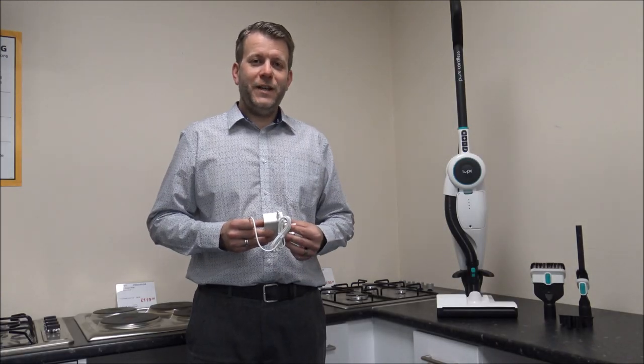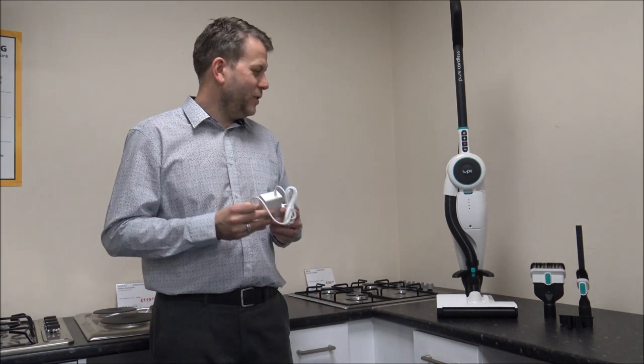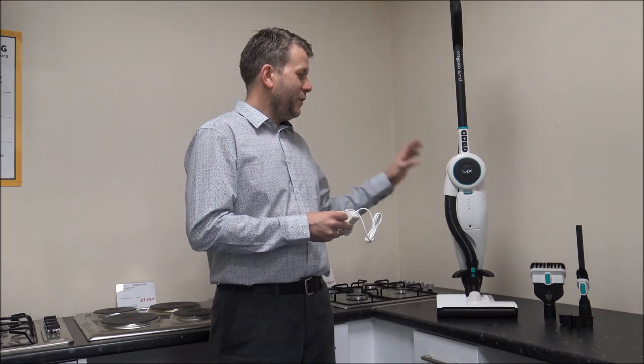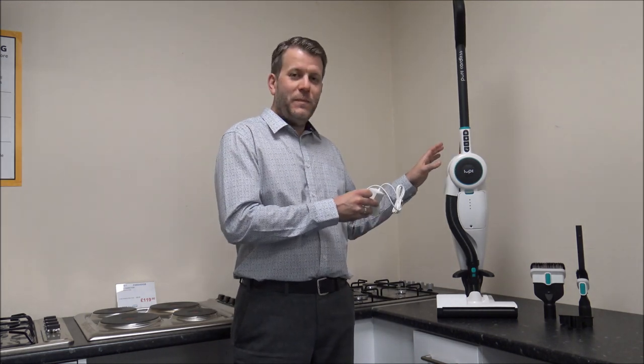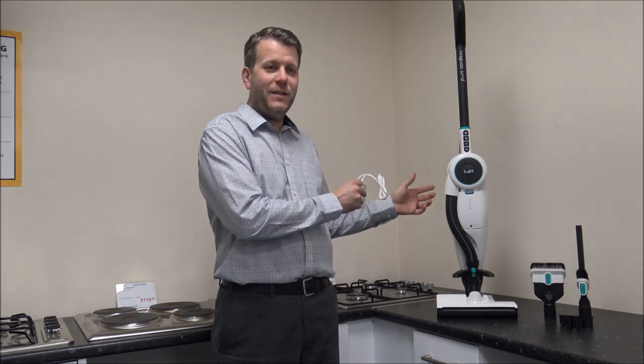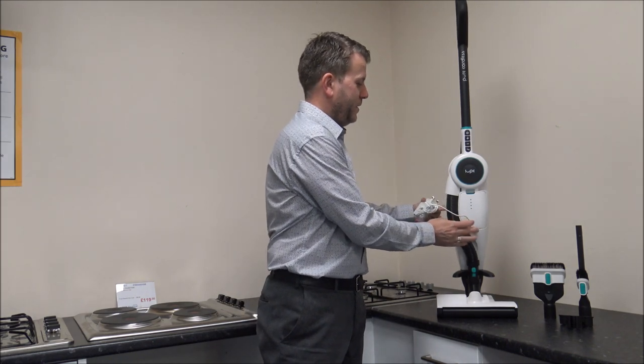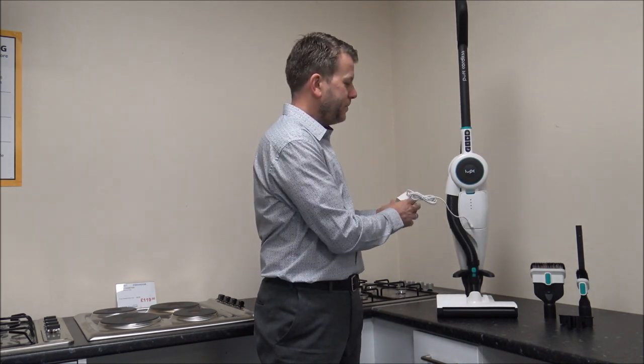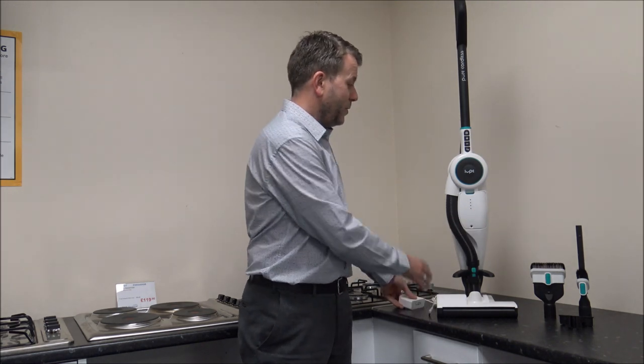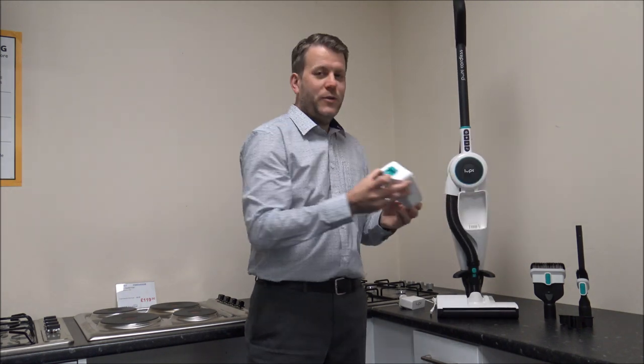So when it comes to charging the vacuum, this is the charger it comes with. There are a couple of ways that you can charge it. The first one is that if you want to find a plug socket and stand the vacuum near to it, you can charge it actually on the vacuum itself, it just plugs in the front there. The other way you can do it is you can actually take the battery out. So it just pulls out like that.